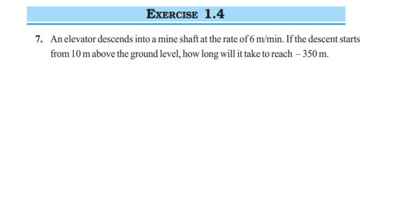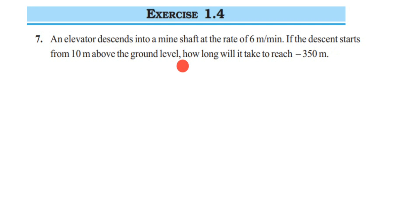Here is a very interesting and important question from exercise 1.4, chapter 7 on integers of class 7. The question is: an elevator descends into a mine shaft at a rate of 6 meters per minute. If the descent starts from 10 meters above the ground level, how long will it take to reach minus 350 meters?